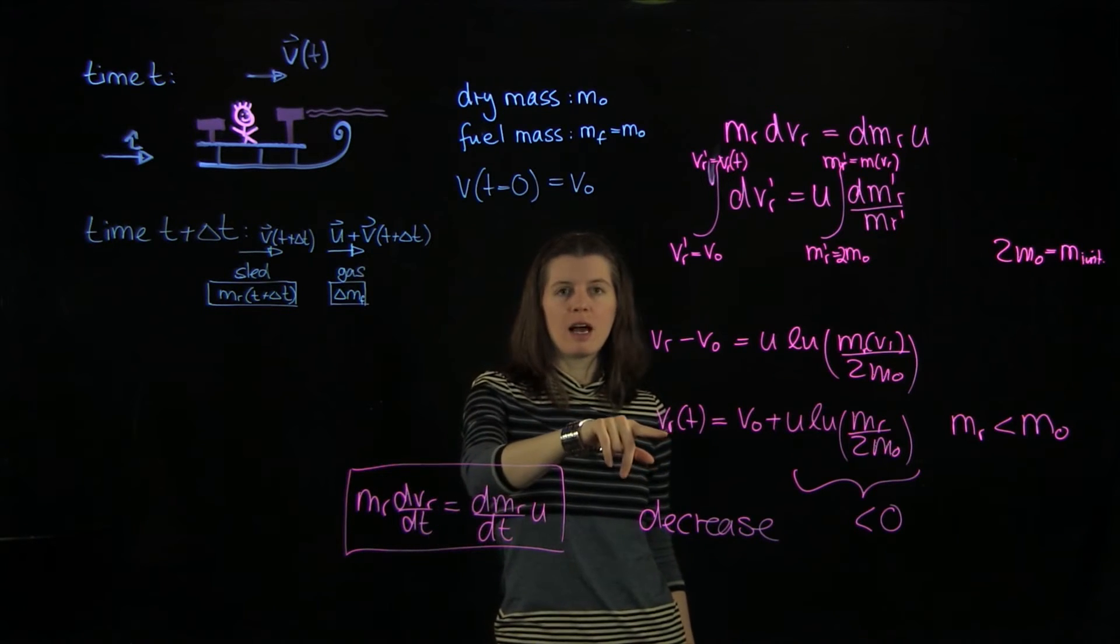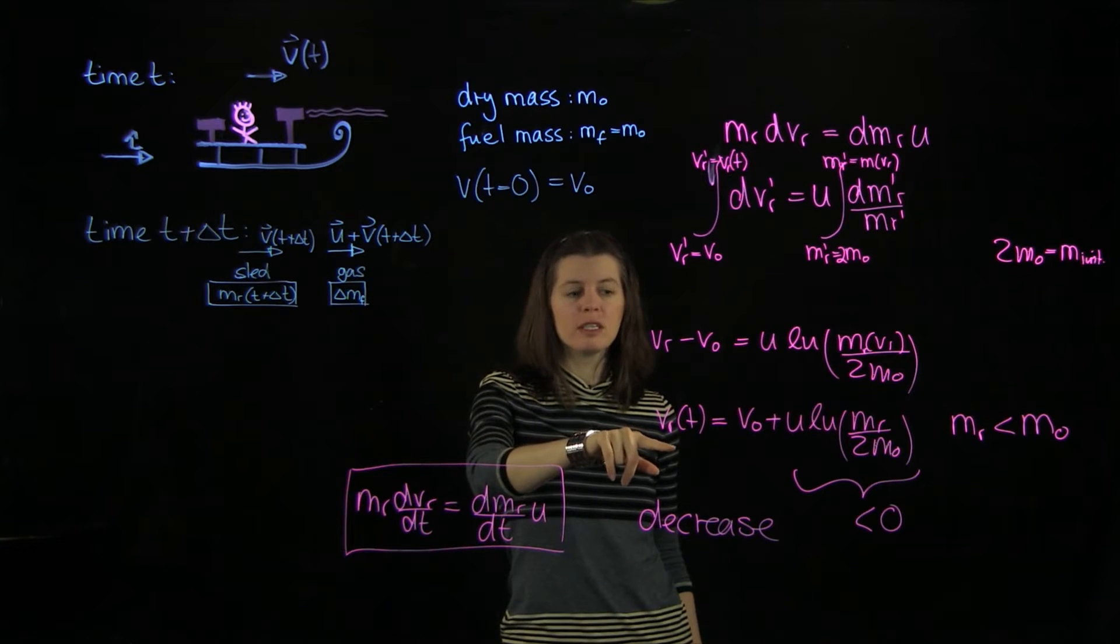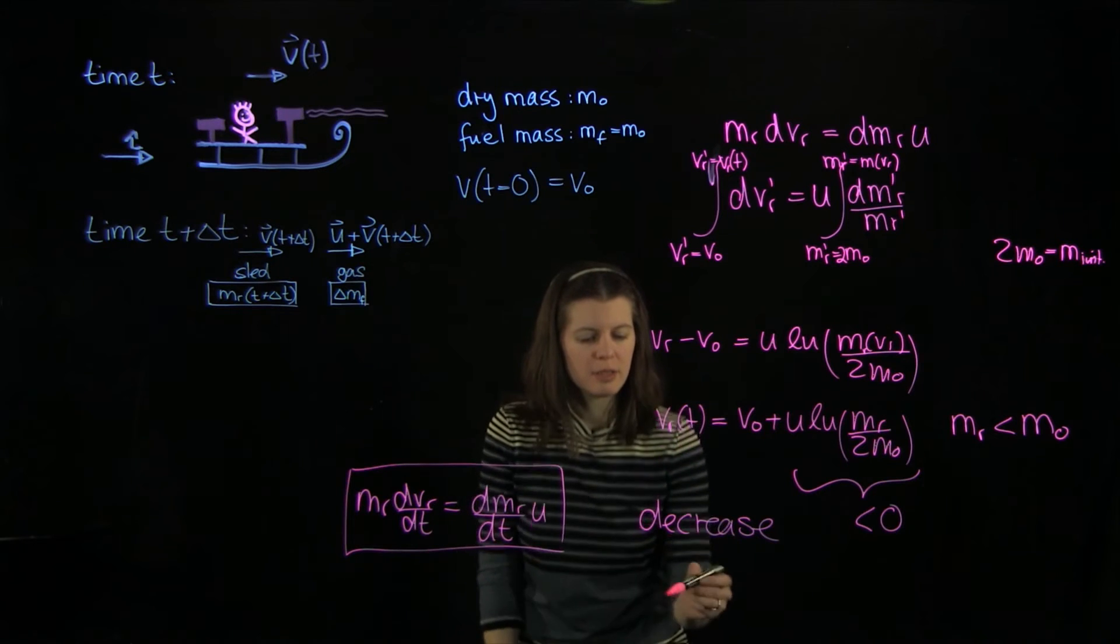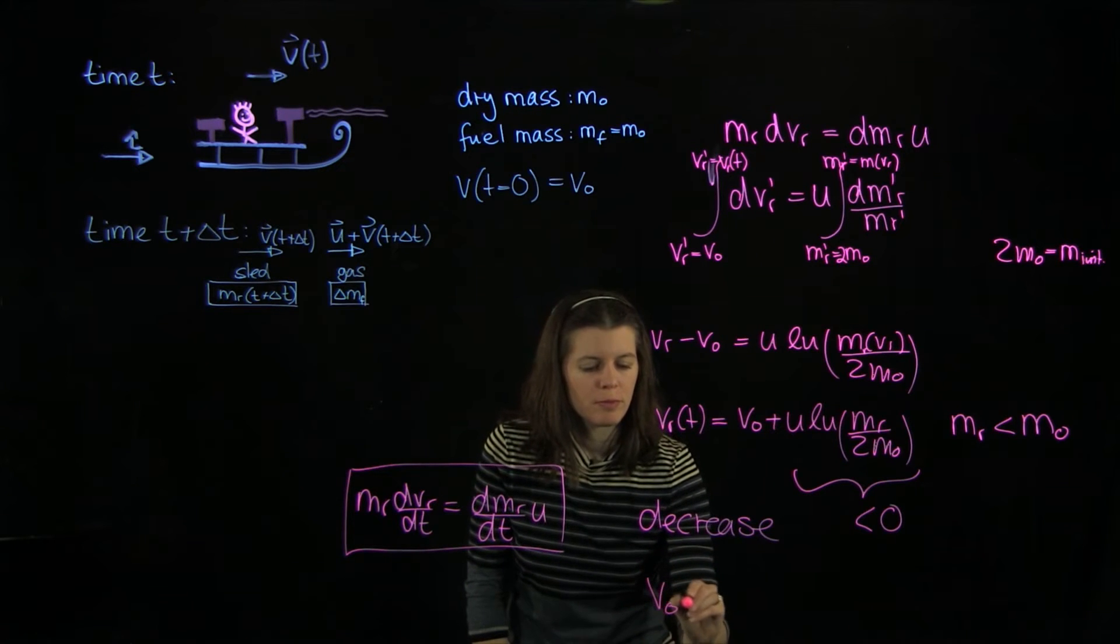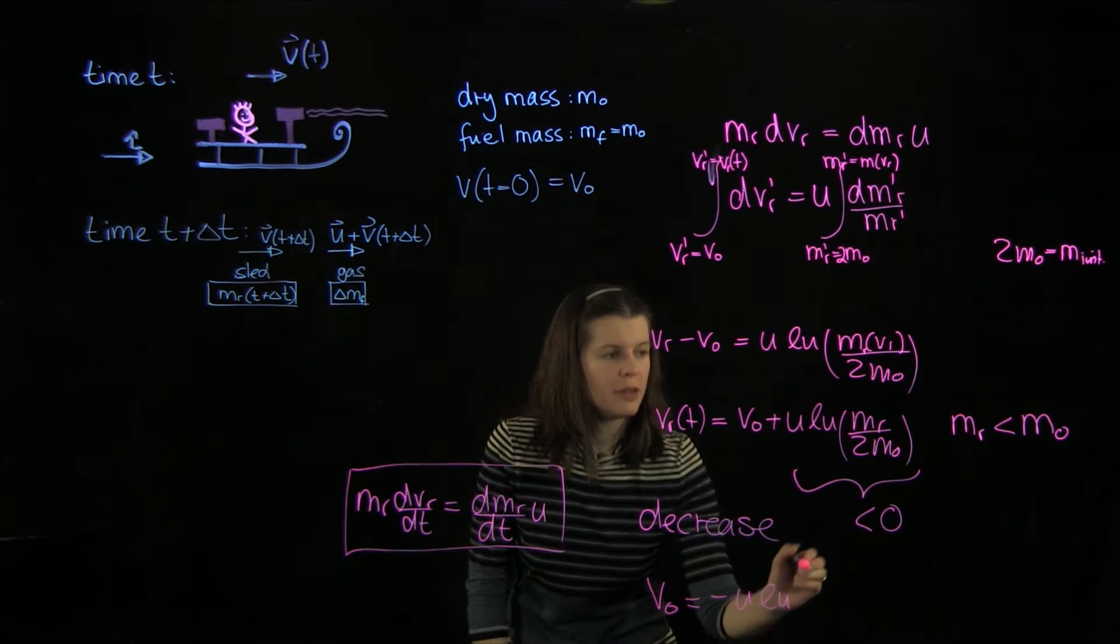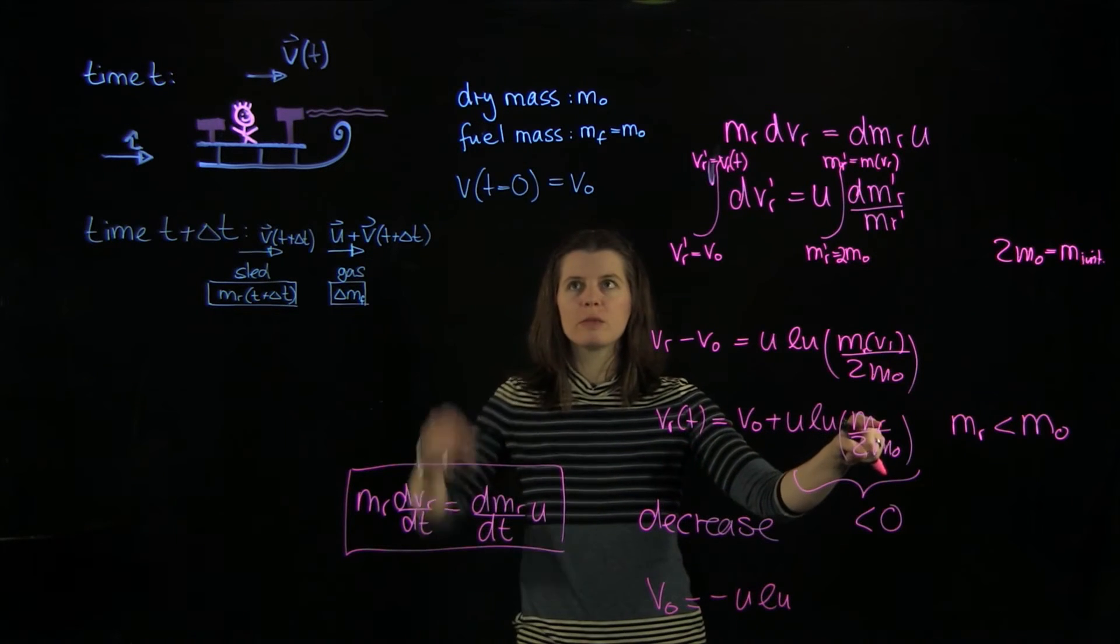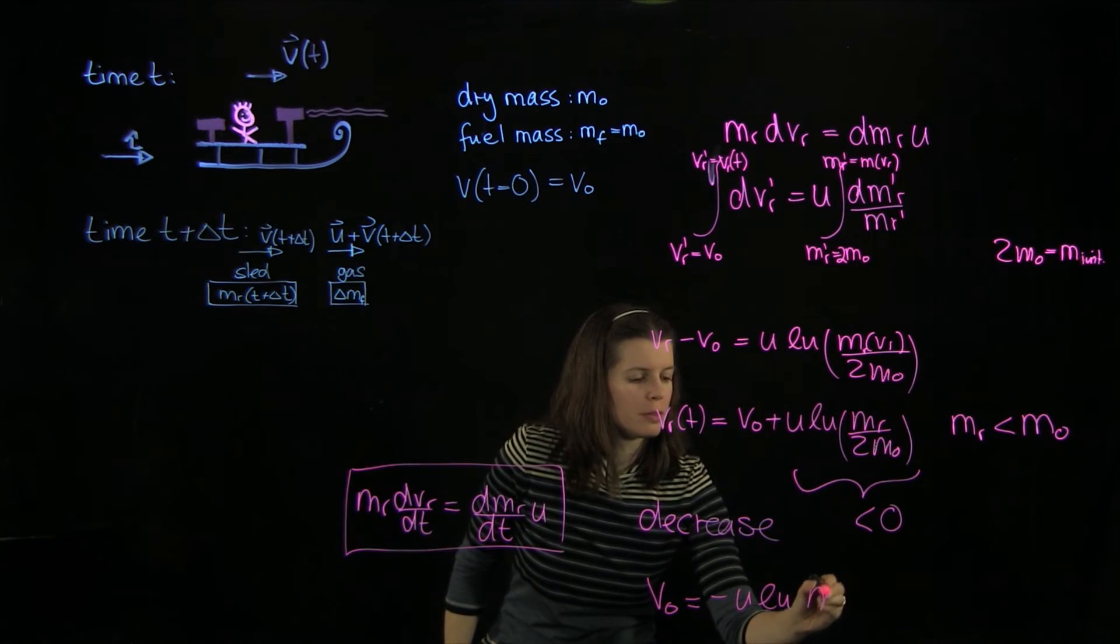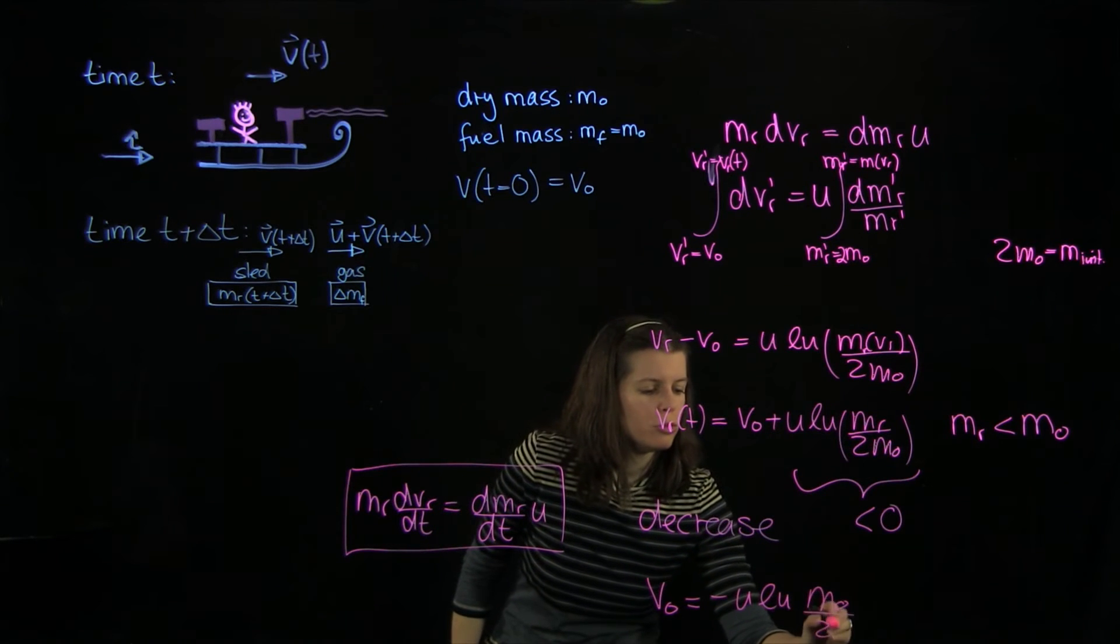That means that our final velocity here is 0. We'll bring v0 to the other side. And then we get a minus u ln. And the rocket mass by then is just the dry mass, m0 over 2m0.